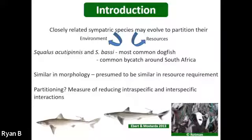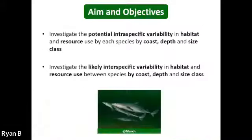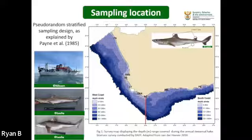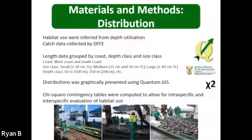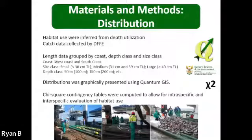To date, there is little literature that focuses on these sharks, so our understanding of their ecological role and impact is limited. The study therefore aimed to determine the potential intra- and inter-specific variability in habitat and resource use between species by coast, depth, and size class. All data were collected during routine intertrawl surveys conducted by DFFE on the western and south coasts of South Africa, extending from the Orange River to Port Elizabeth, with Cape Agulhas forming the border between the two coasts.